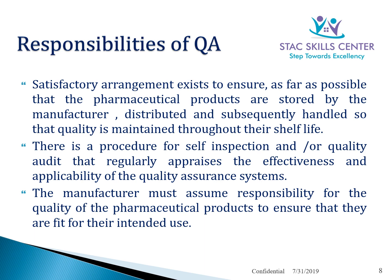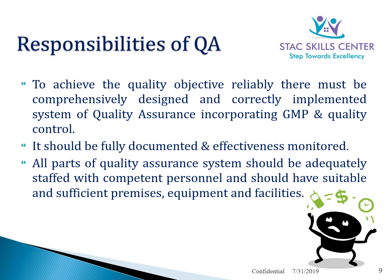There is a procedure for self-inspection and quality audit that regularly appraises the effectiveness and applicability of the quality assurance system. The manufacturer must assume responsibility for the quality of pharmaceutical products to ensure they are fit for their intended use. To achieve the quality objective reliably, there must be a comprehensively designed and correctly implemented system of QA incorporating GMP and quality control. It should be fully documented, its effectiveness monitored, and all parts adequately staffed with competent personnel, suitable premises, equipment, and facilities.